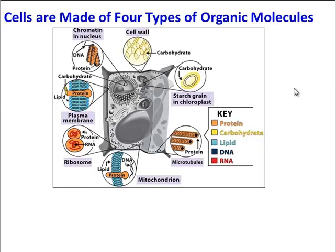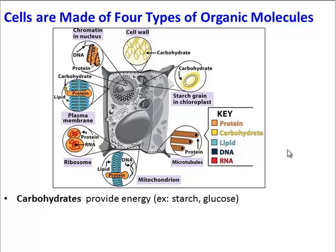Let's start with a quick review. As we've seen in earlier units, cells are made of four types of organic molecules. If you look at this picture, we are closing in on a plant cell, and plant cells contain proteins, carbohydrates, lipids, and nucleic acids.